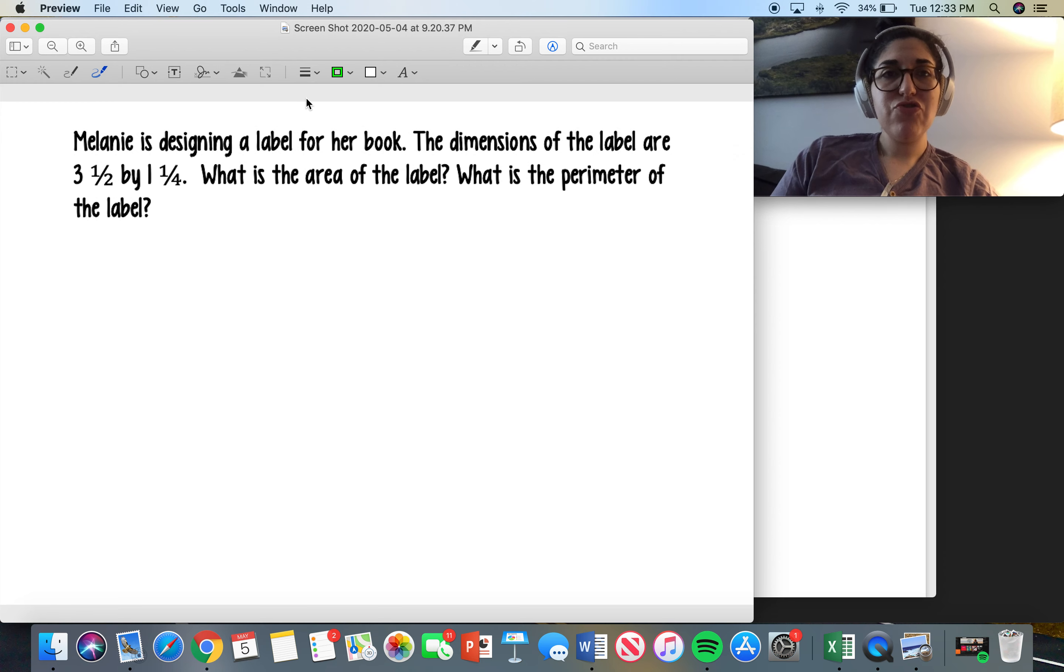Hey scholars! Alright, so let's get to work on this application problem for Wednesday. In this story we have Melanie and she is designing a label for her book that she just wrote. The dimensions of the label are three and one-half by one and one-fourth. We have two questions we're trying to answer. What is the area of the label? What is the perimeter of the label?